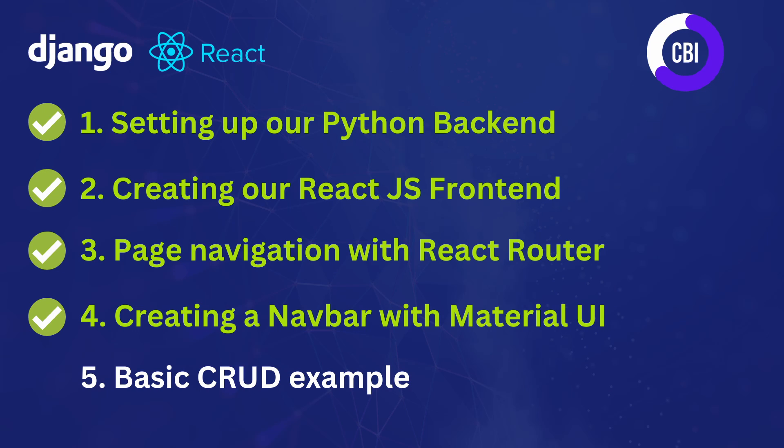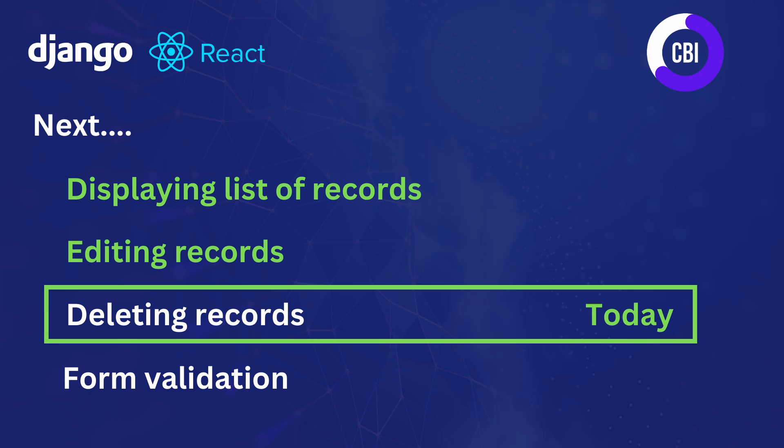Hi everyone and welcome to a new video on the CBI channel. In this tutorial series, we're creating a full stack web application using Python Django as our backend and React.js frontend. This is not the first video in this series. We've done nine before in which we've completed the React.js setup, our Python Django setup, page navigation, creating a navigation menu, creating and editing records for our database, and displaying them on the homepage.